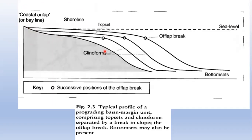The off-lap break point occurs between the clinoform and topset. It is the break point where the slope separates from the shelf, or where the clinoform separates from the topset. This separating point between slope and shelf is termed the off-lap break point.